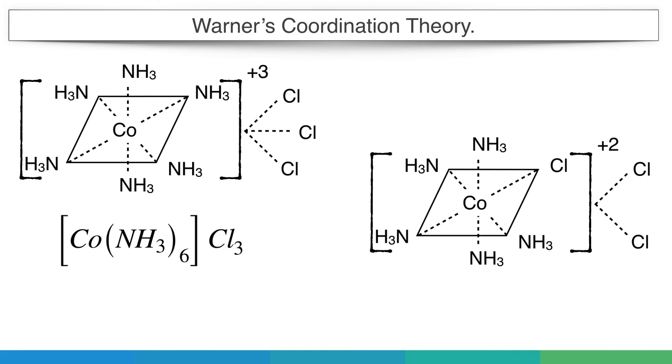Similarly, in the second example, pentaamine chloro cobalt 2 chloride, coordination number of cobalt is 6. The 5 ammonia molecules and 1 chloride ion enclosed in the square bracket satisfy the secondary valency, which is again 6. The 2 chloride ions which are outside the square bracket, and 1 chloride ion which is inside the square bracket, satisfy the primary valency of cobalt, plus 3.